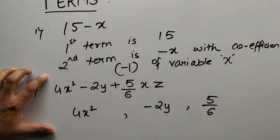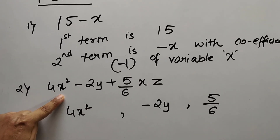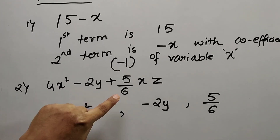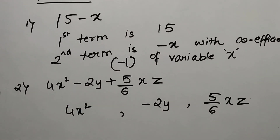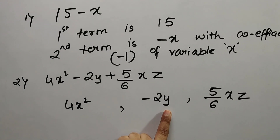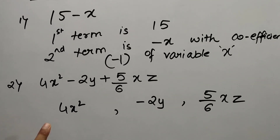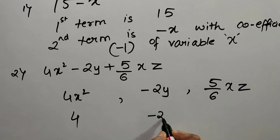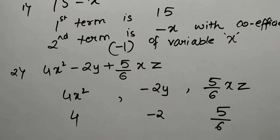Let us see one more example. In this example, there are three terms. The first term is 4x square, the second term is minus 2y, and the third term is 5 upon 6 xz. The variable here is x; in the second term the variable is y; and in the third term the variable is xz. The coefficient is 4, the coefficient is minus 2, and the coefficient is 5 upon 6.